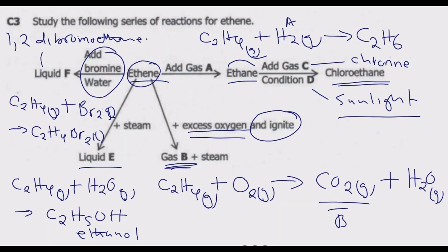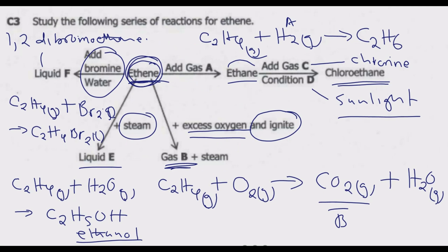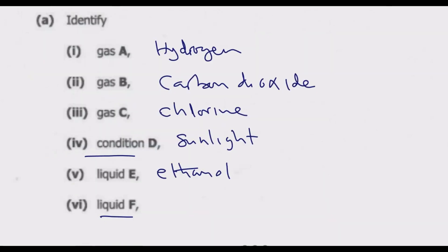Liquid E: we already found this — it is formed when ethene reacts with steam in the presence of phosphoric acid to form an alcohol, so liquid E is ethanol. Liquid F: adding bromine water to ethene gives us 1,2-dibromoethane. The bromine bonds at positions one and two along the carbon chain, which is why we name it 1,2-dibromoethane. Check our video for more details on naming.